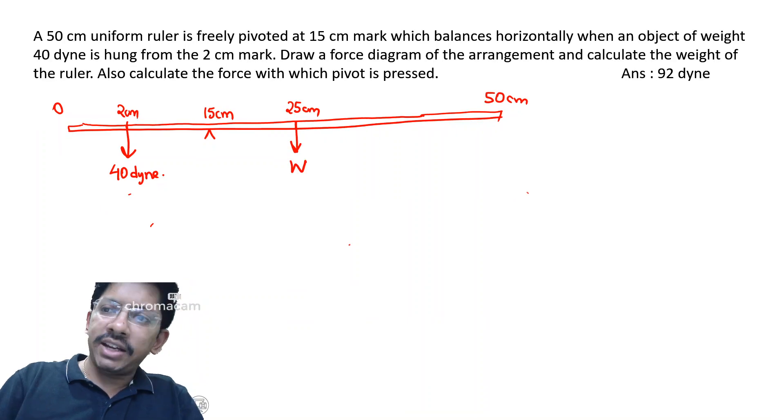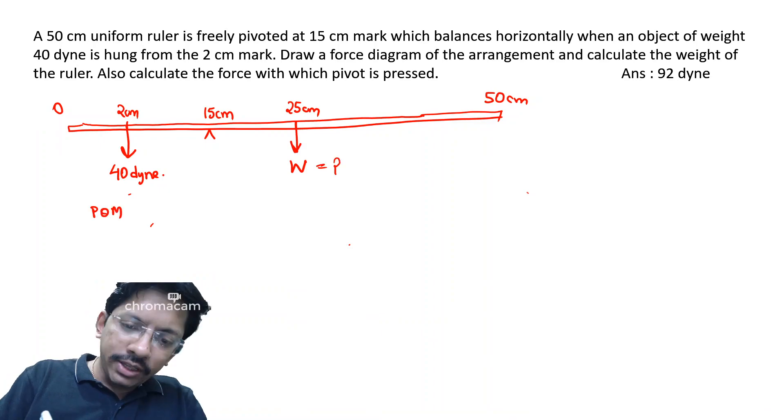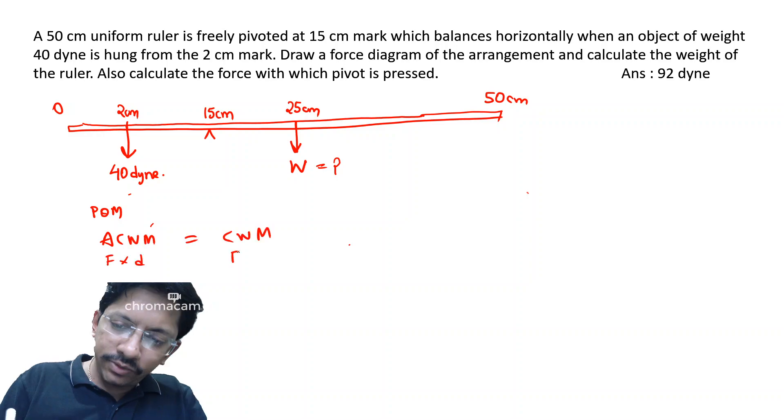We have to find the weight of the ruler W. According to principle of moments, anticlockwise moment is equal to clockwise moment. The formula for both the moments is force into distance. This 49 force will produce anticlockwise moment.